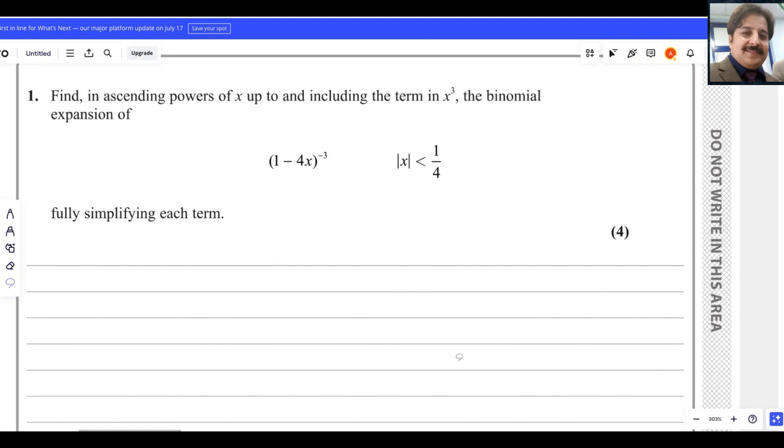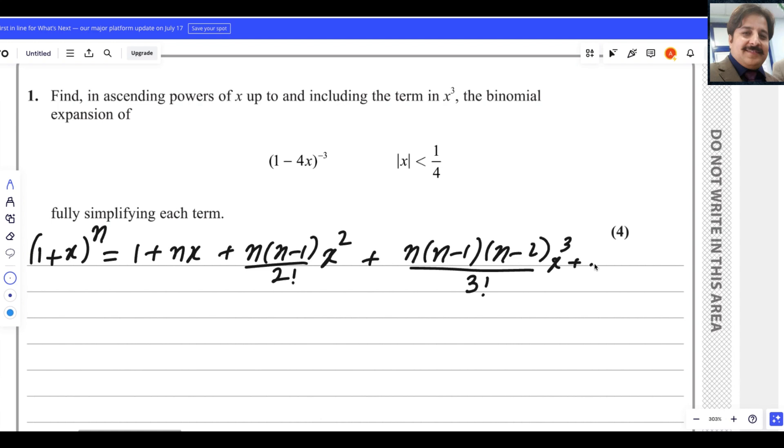This question can be solved using the binomial expansion formula. What is the binomial expansion formula? Let me write it here: (1+x)^n = 1 + nx + n(n-1)/2! x² + n(n-1)(n-2)/3! x³ and it continues.